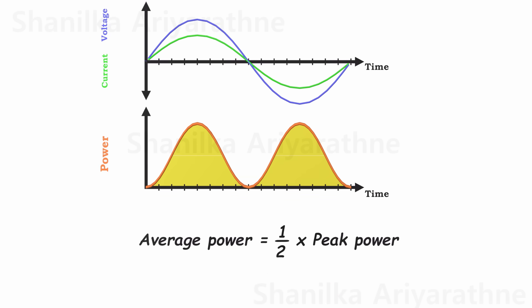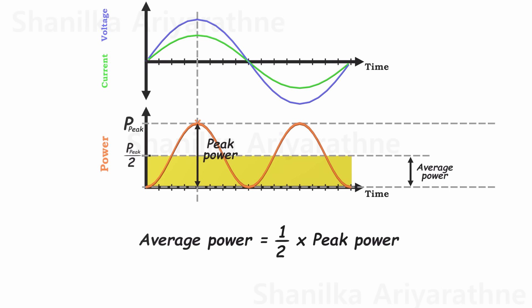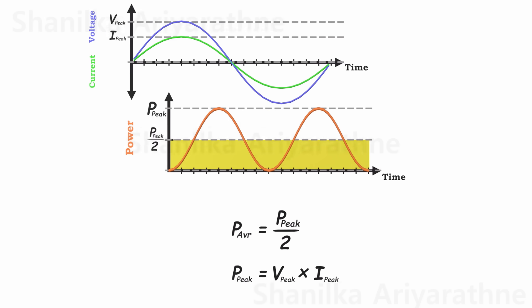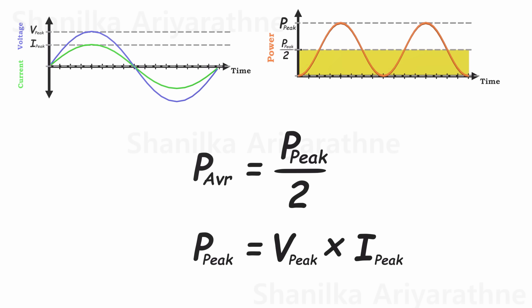If we calculate the average power over one full cycle, it's consistently half of the peak power. What's the peak power? It's the highest value of voltage multiplied by the highest value of current. In essence, the average power in an AC system is always half of the peak power.